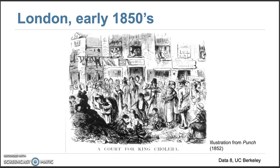Let's go back to London in the early 1850s. In this picture, what do you see? We call this picture 'Court for King Cholera.' In early 1850s London, cholera was a very feared disease.